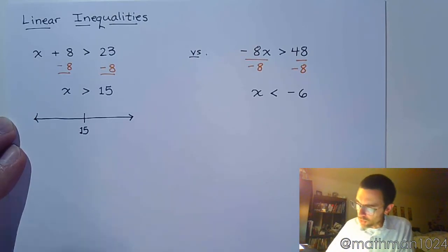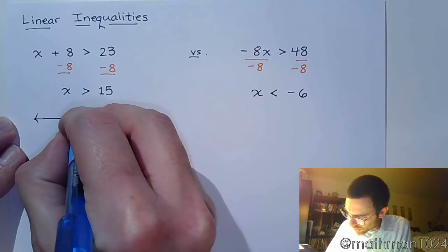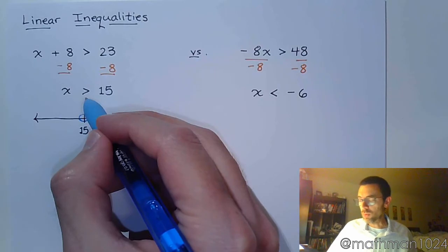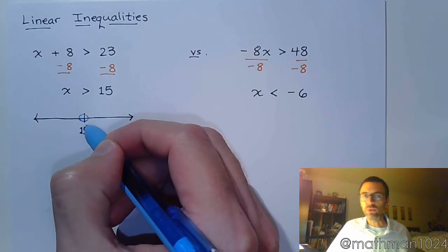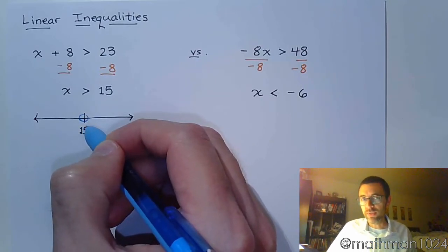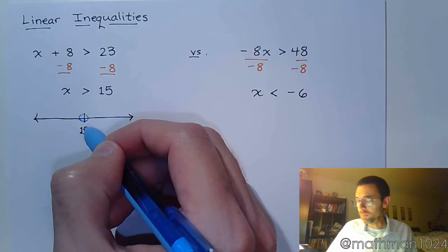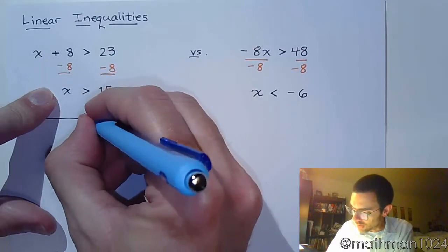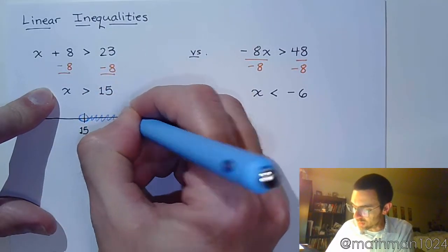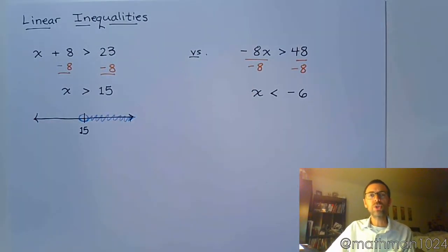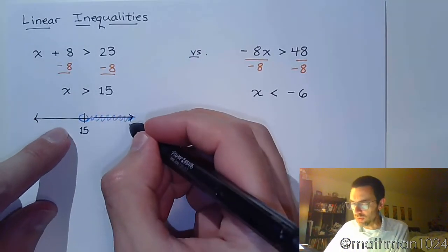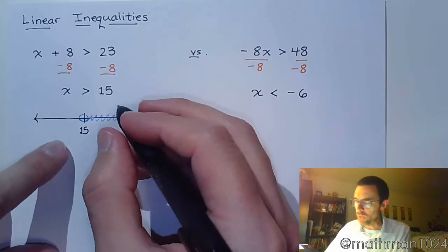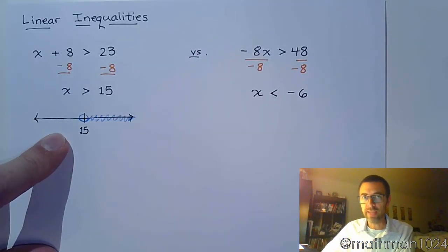I graph mine a little bit differently than maybe the textbook does because this is how I've been graphing them for years. So at 15 I'm going to put a circle. And since I'm greater but not equal to, this is going to remain an open circle that denotes we can get as close to 15 as we want to, but we're not going to include it. So x, which represents your solutions, are those numbers that are greater than 15, on the right side of 15.